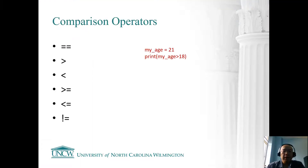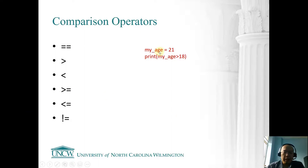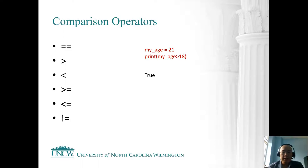The very first thing: comparison operators. We've already seen them before — equals equals means we are testing whether value one equals value two, and then greater than, smaller than, greater equal to, smaller equal to, and not equals. On the right side I create a simple code where my age is 21 and I print my age greater than 18. My age is indeed greater than 18, so if you run this code the answer is true.